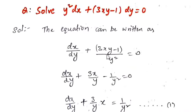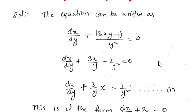Rearranging and writing the denominator separately: 3x·(y/y²) = 3x/y, and minus 1/y² = 0. Sending the constant term to the right side gives dx/dy + (3/y)·x = 1/y².